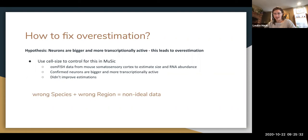So they said, yeah okay, so we saw that the neurons were bigger and more transcriptively active. So they use these new parameters in MuSiC, but they didn't see it didn't improve estimation.